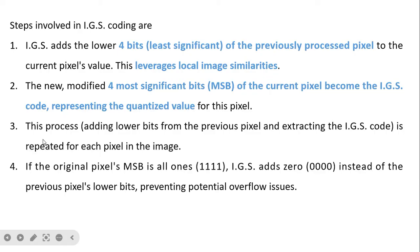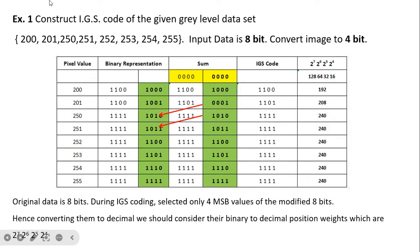Now these four steps will be understood with the help of Example 1: construct the IGS code of the given gray level data set. These pixels are given, and the input data is 8-bit. We require to use the IGS code in which the resultant sample is 4-bit. We first represent the pixel values in binary representation, and for simplicity a partition is made so that it is easy to understand.